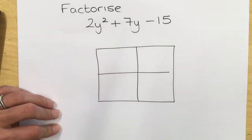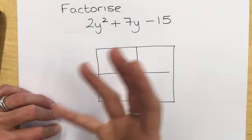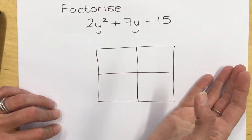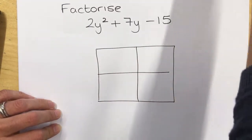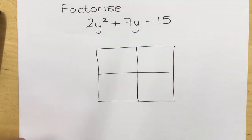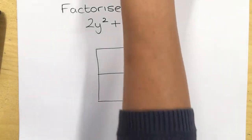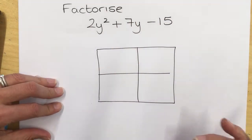So what we're going to do is, I would suggest you review, if you've not used the grid method for expansion, my tutorials on how to expand using a grid, because that's going to help you figure out how to work backwards to factorize.